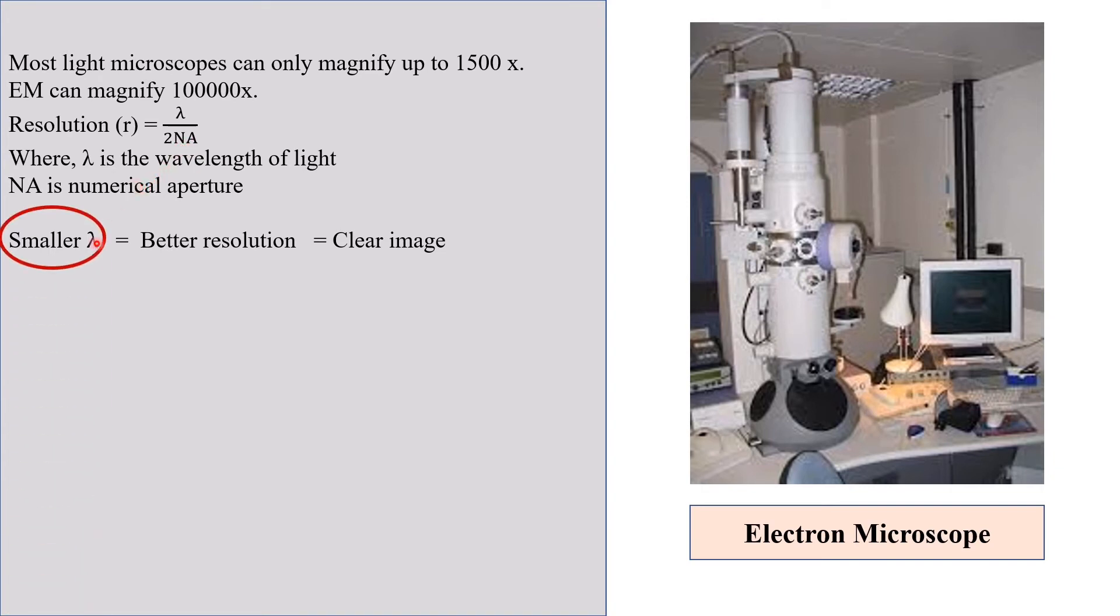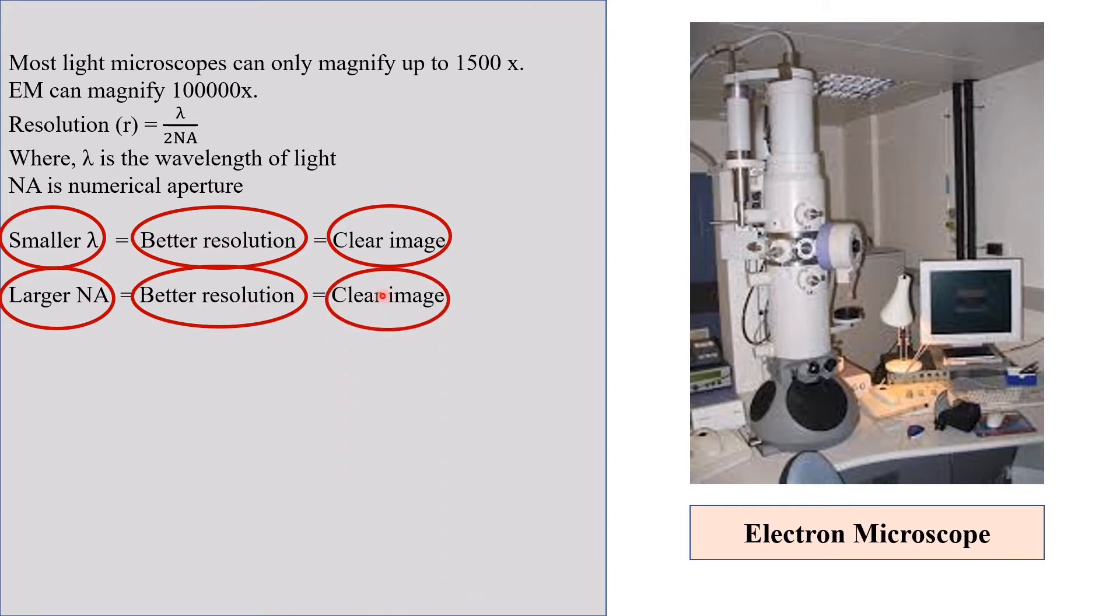Now, smaller the lambda, better will be the resolution and the image will be more clear. And larger NA equals better resolution that will give you clear image.